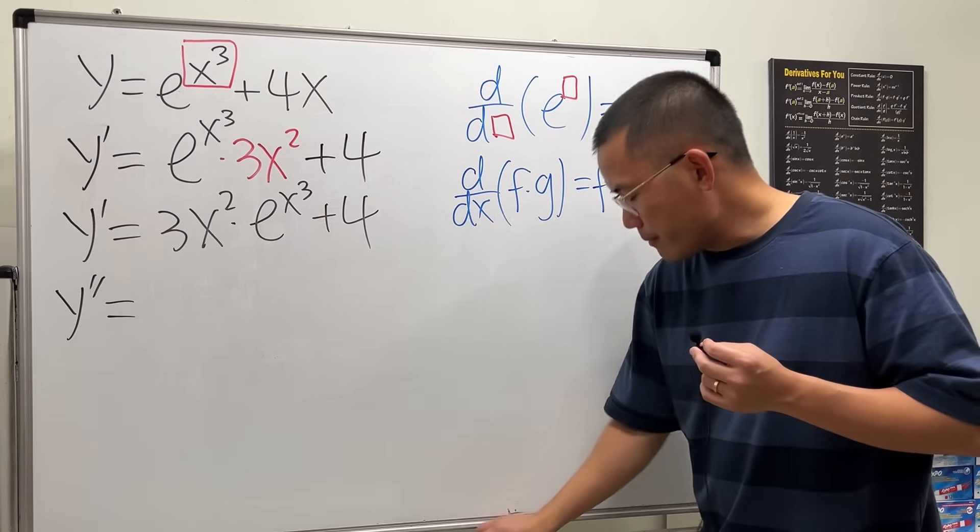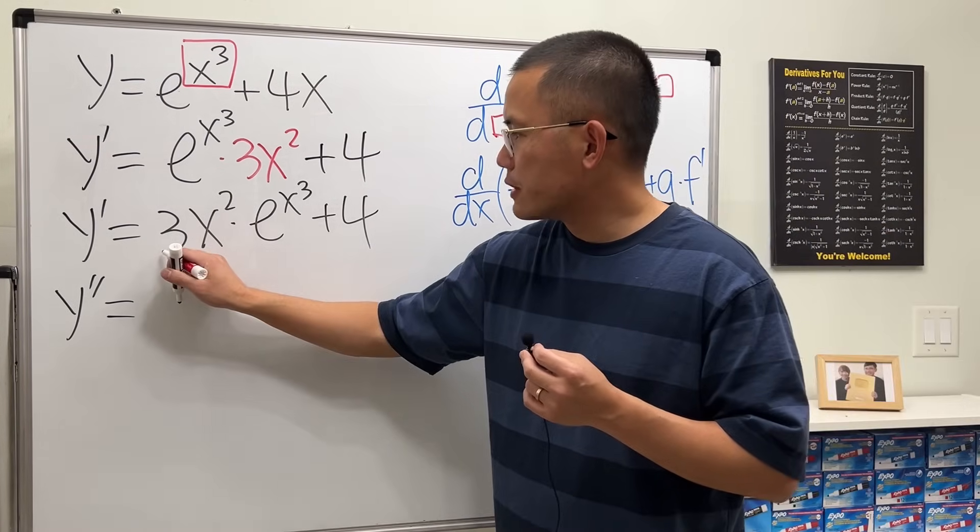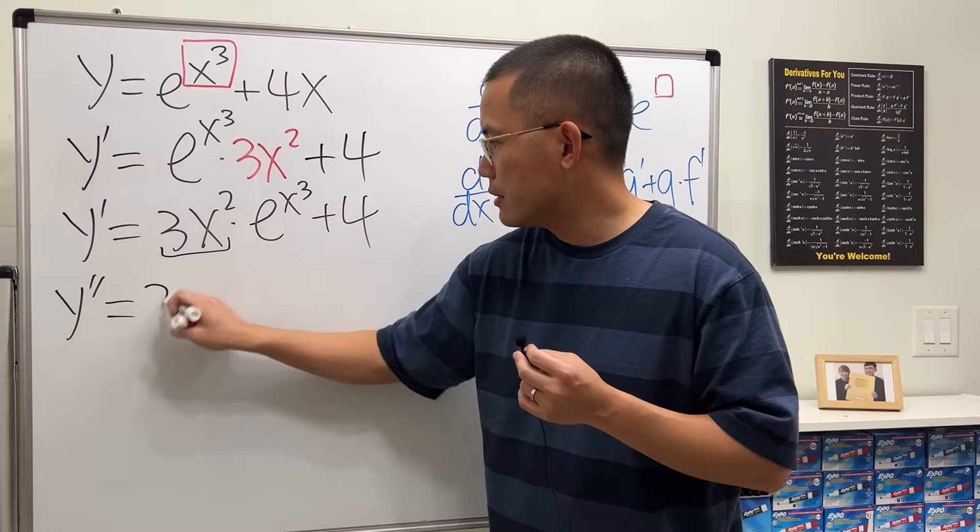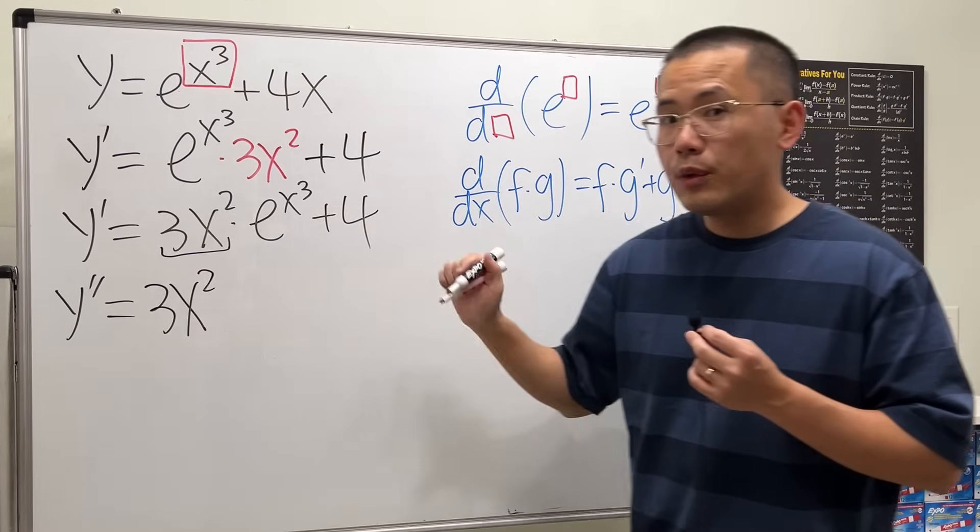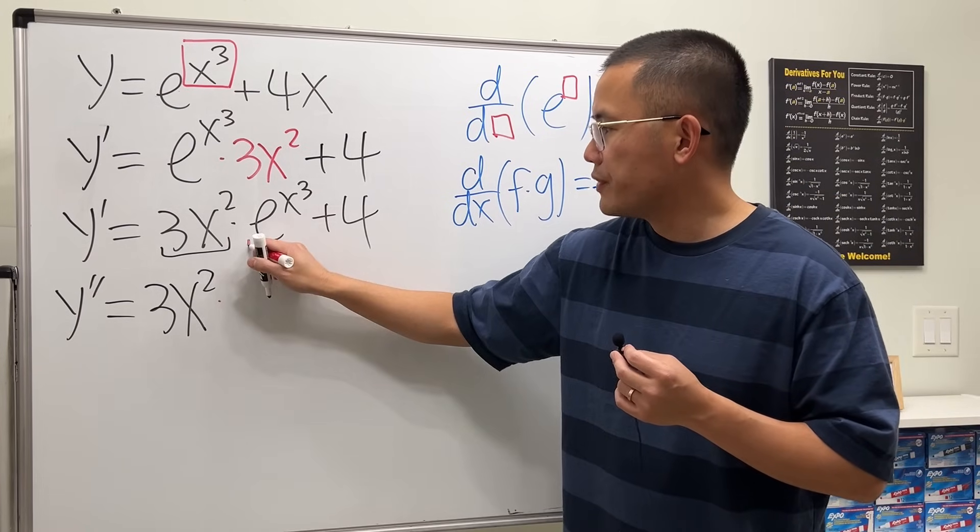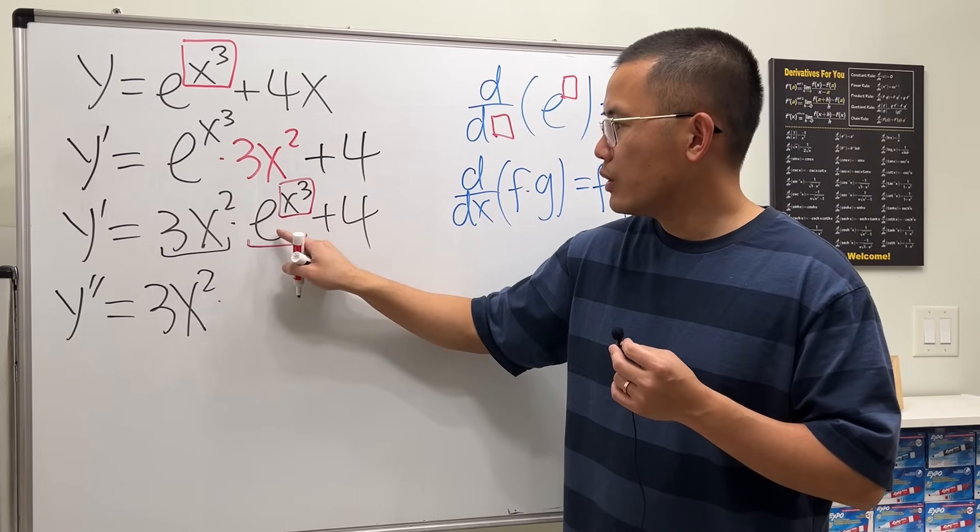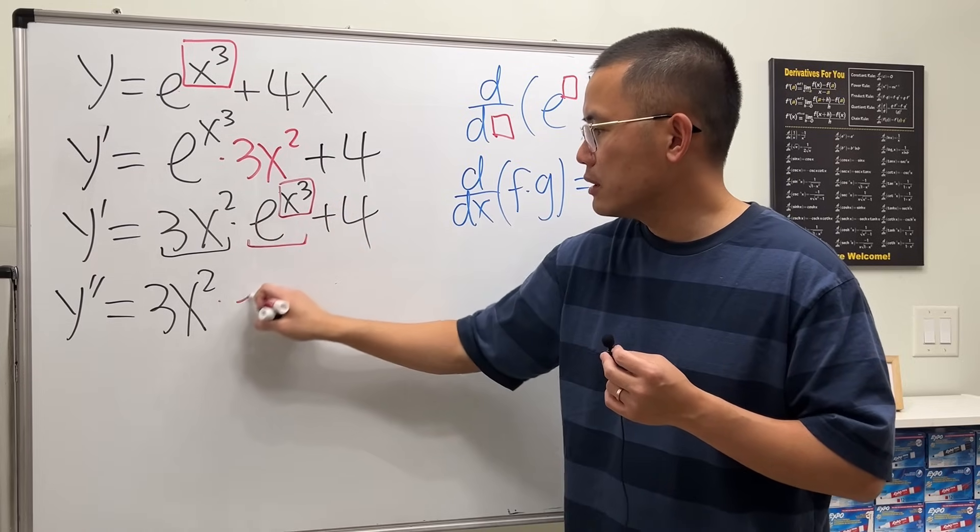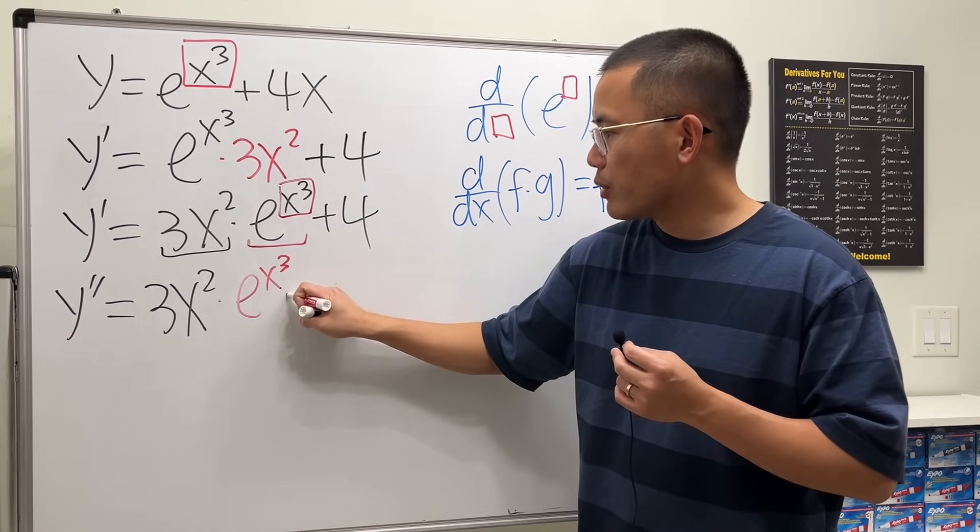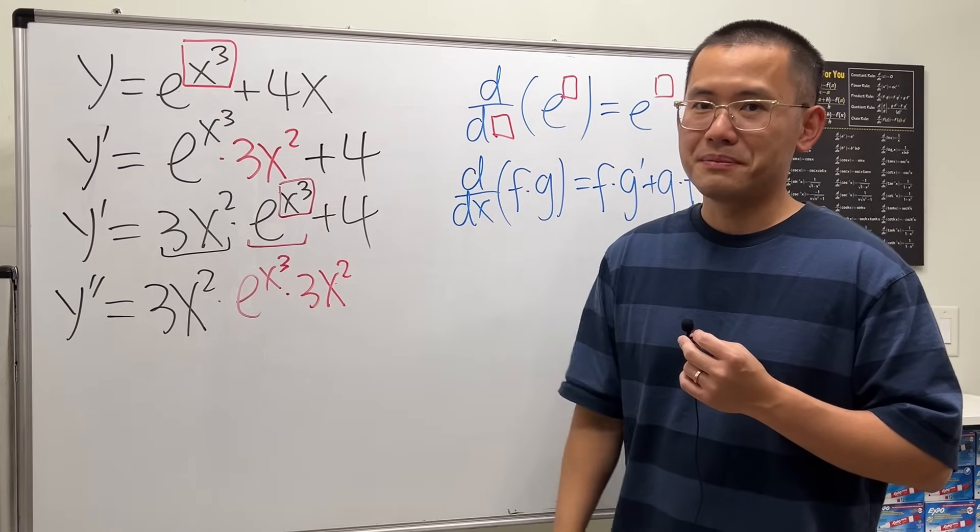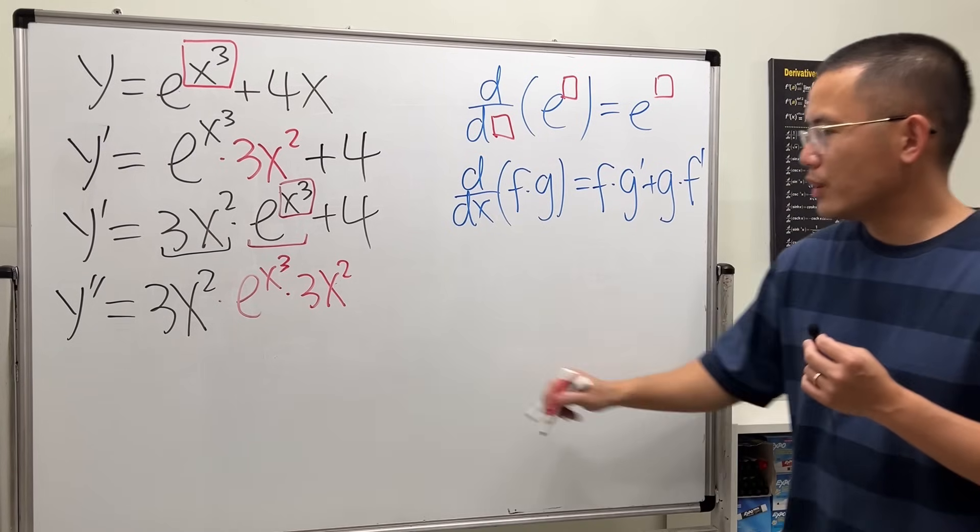Anyways, for this, this is our first function - I'm going to keep it. Then we multiply by the derivative of the second. The derivative - this is e to the box. We first keep the box like we did, then multiply by the derivative of the box, which is 3x². But we still have the other part - add the second function, write it as it is